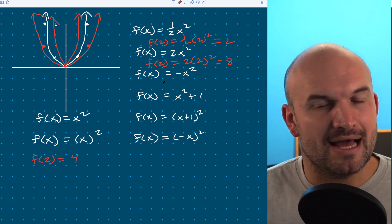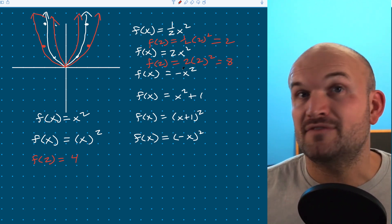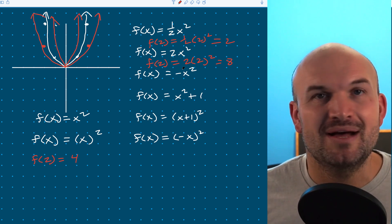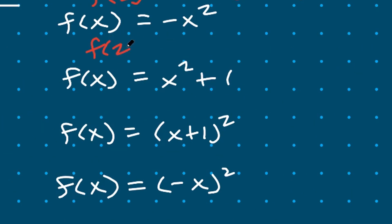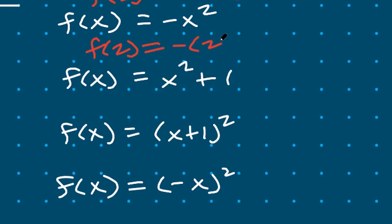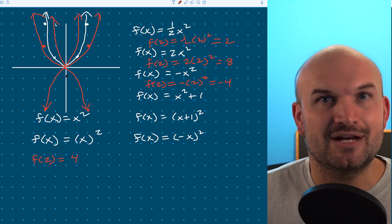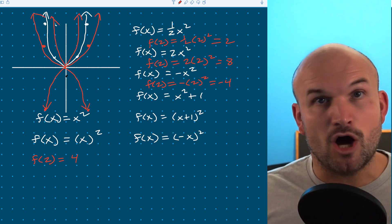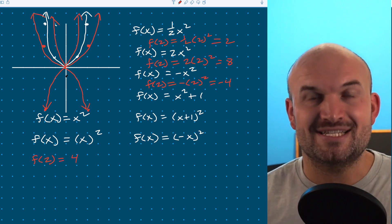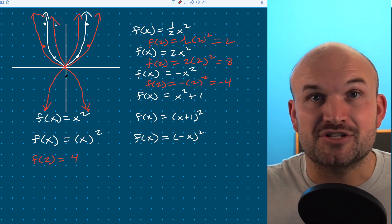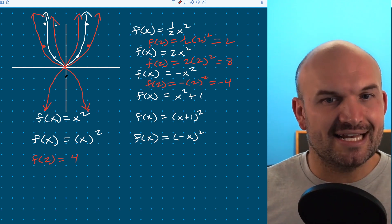The next example has a negative number outside of the function — it's not inside. Let's plug in two to see what happens. When I'm plugging in two, only the two is going to be squared because the negative is on the outside of the walls. So I have two squared, which is four — this ends up being negative four. So when I go over two, I'm going down four. What's happening is this graph is being reflected about the x-axis. Notice with all this multiplication — stretching, compressing, or reflecting — the vertex of the parabola has not changed.